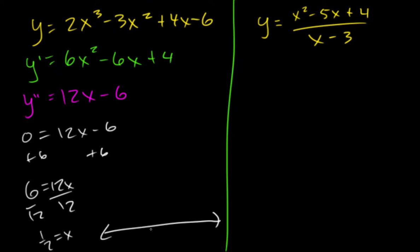We do our sign diagram at 1 half. So I'm going to choose 0 and 1. If I plug in 0 here, 0 minus 6 is going to give us a negative answer. If I plug in a 1, 12 minus 6 is going to give us a positive answer.